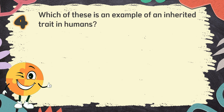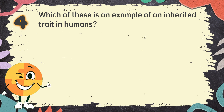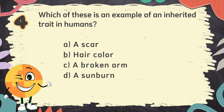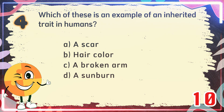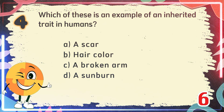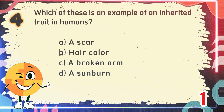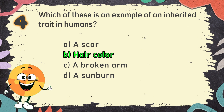Number 4. Which of these is an example of an inherited trait in humans? The choices are A. A scar, B. Hair color, C. A broken arm, D. A sunburn. The correct answer is B. Hair color.